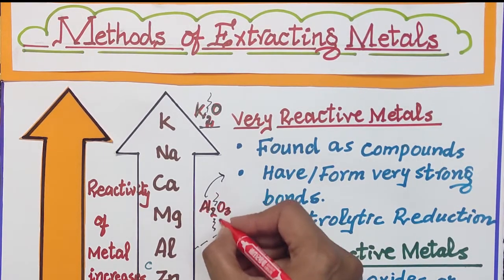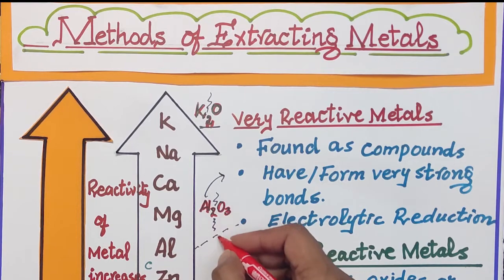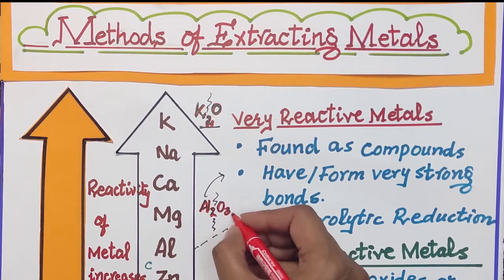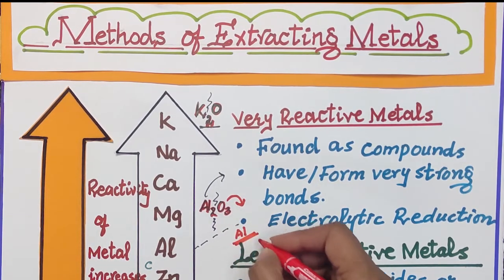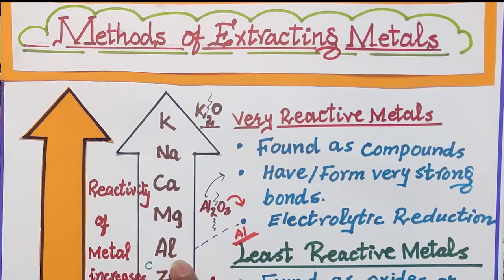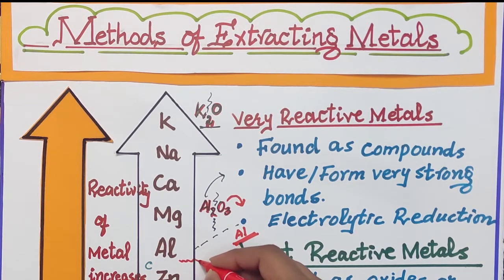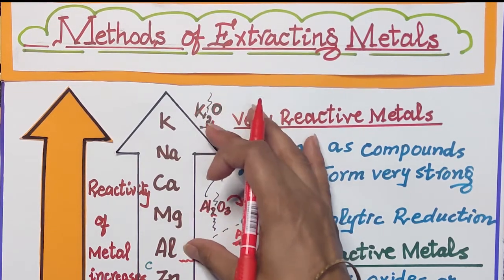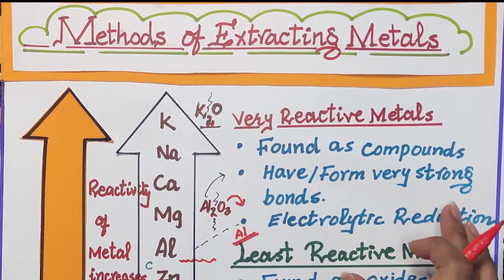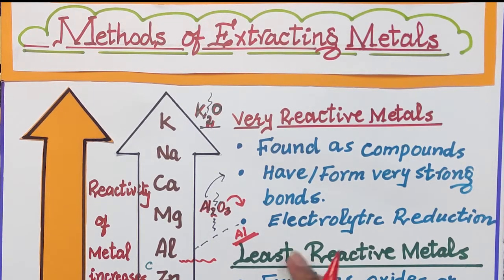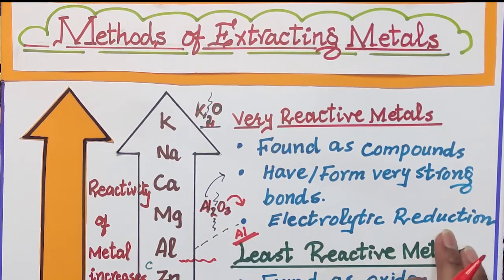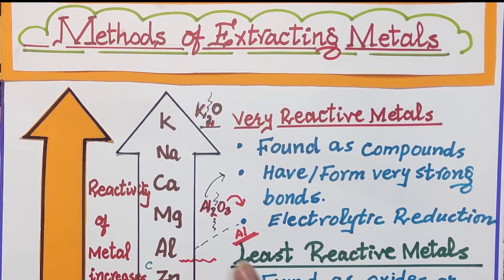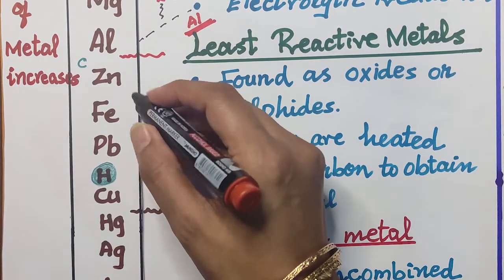Electrolytic reduction is the process where we provide electrolysis to the compound. In the electrolysis process, reduction takes place: the oxygen comes out and aluminium is extracted as a metal. All metals above and including aluminium in the reactivity series are most reactive and cannot be separated from their compounds easily — we must provide electricity to decompose them. So electrolytic reduction is applied to extract these highly reactive metals.